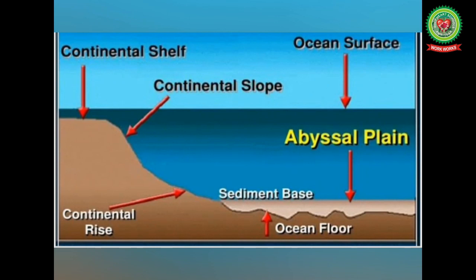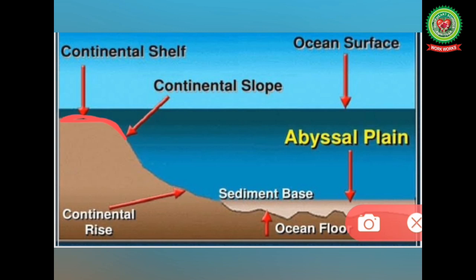The continental shelf covers about 7.5% of the total area of the world's oceans and is the most important part of the ocean floor. Sun rays can penetrate to the depth of the continental shelves, helping the growth and reproduction of marine organisms and vegetation. Continental shelves provide the richest fishing grounds and are also potential mining sites for economic minerals. About 20% of world petroleum and gas comes from continental shelves, and they are also large storehouses of sand and gravel.